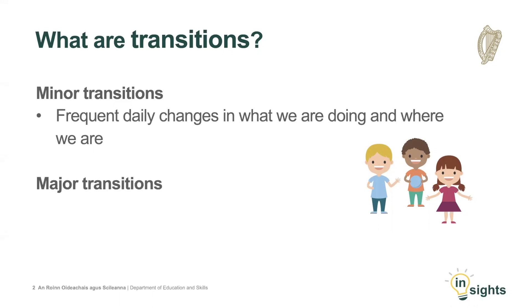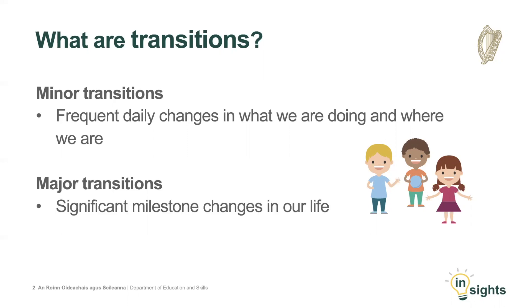We also experience bigger transitions as we move through life – major transitions such as beginning early years education, starting primary school, moving out of home, taking up a new job. As adults, we have control over the frequent minor daily transitions and most of our major life transitions. However, for young children, many decisions about transitions are made for them. Transition is about change and adapting to things being different.